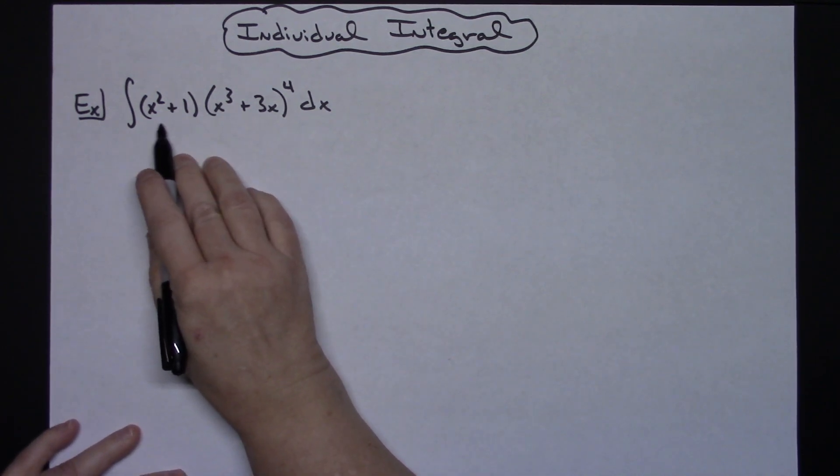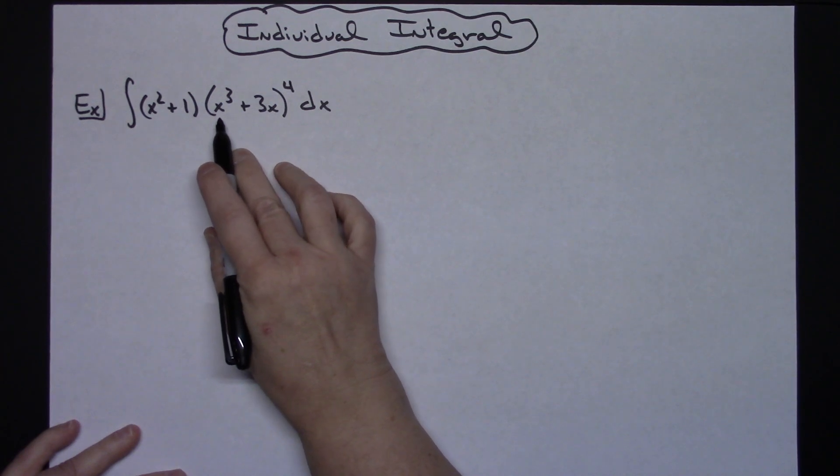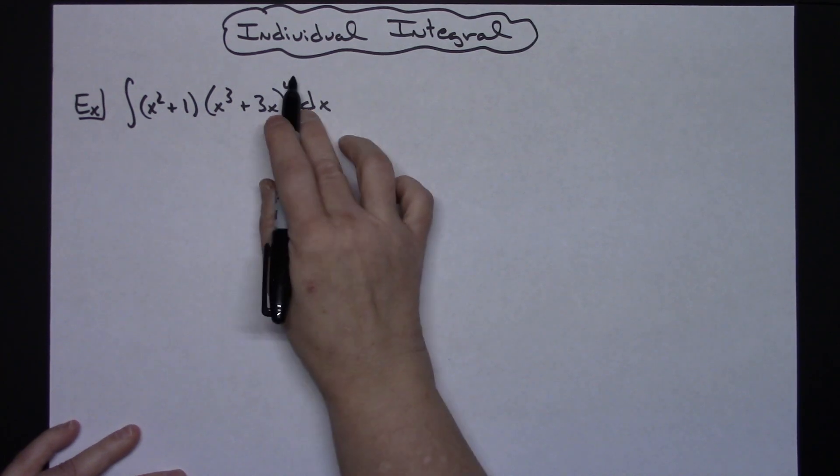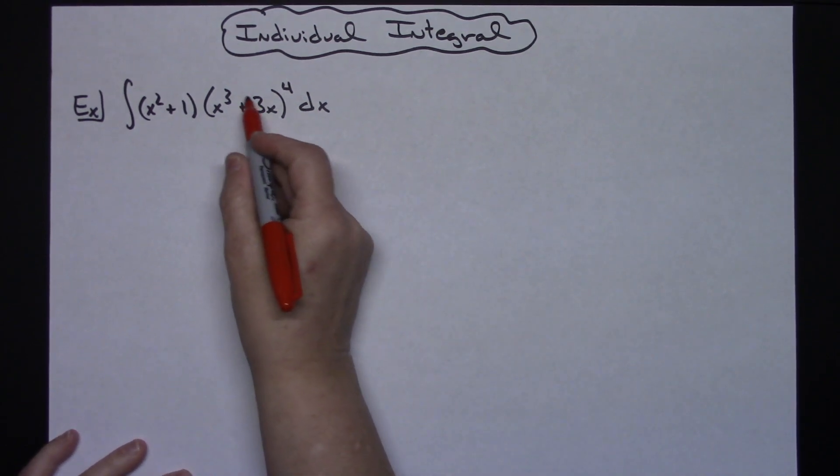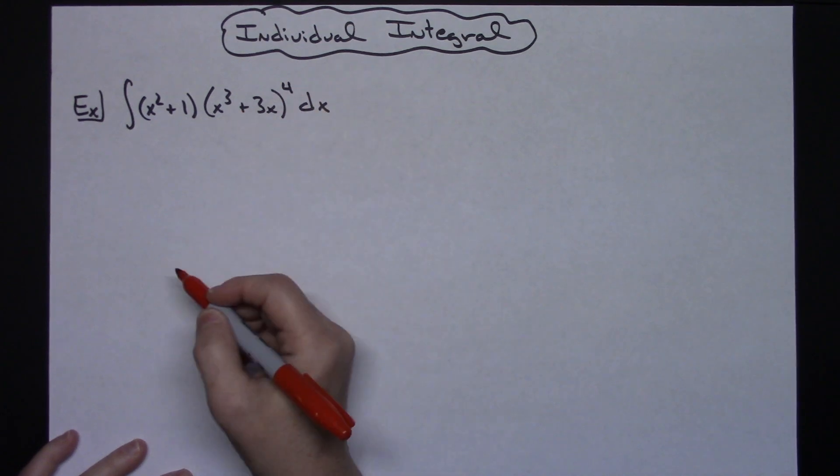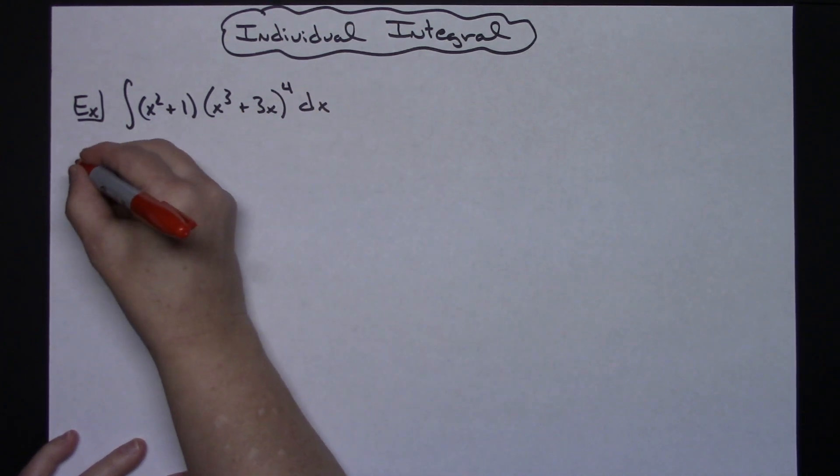So we've got the integral of x squared plus 1 times that quantity of x to the third plus 3x to the fourth dx. Knowing that u-substitution is a real common method here, you've clearly got an inside function being raised to the fourth, so that's where I'm going to start.